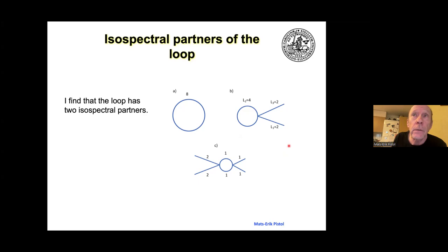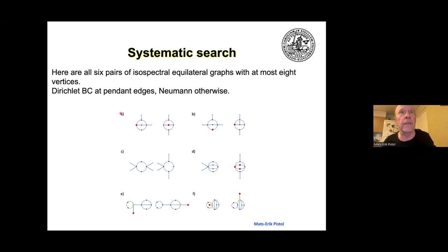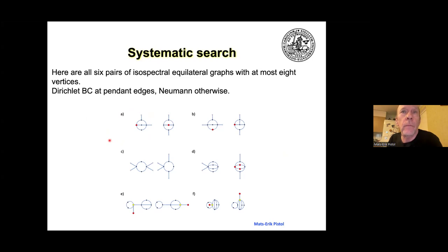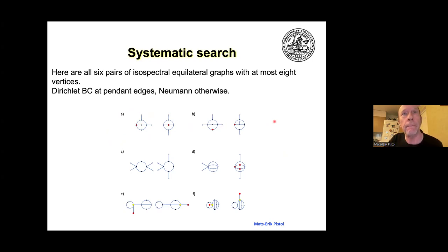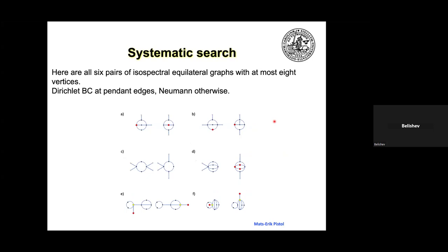Then I did the same thing but with different boundary conditions. In this case, Neumann-Kirchhoff boundary conditions at the internal vertices, and traditional boundary conditions at pendant edges — that is, edges that end like this one. These are the first six isospectral pairs I found in this case, using Neumann-Kirchhoff boundary conditions. The number of pendant vertices is different for one of the pairs.